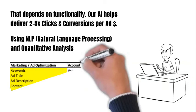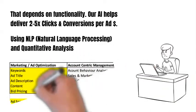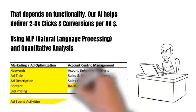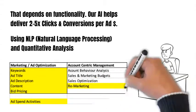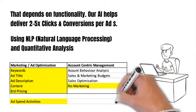Everything we do is organized into account-centric data models, and we always start with account behavioral analysis because that's how the B2B world works. Our NLP helps deliver keywords, ad titles and descriptions, and content, while our quantitative analysis delivers on budgets, remarketing, and bid pricing.